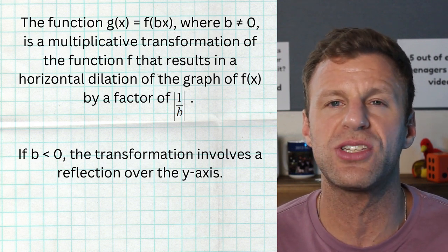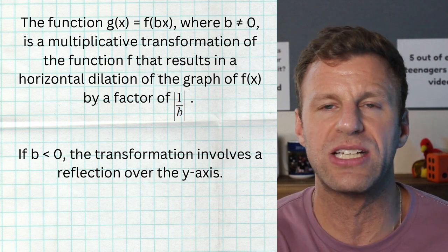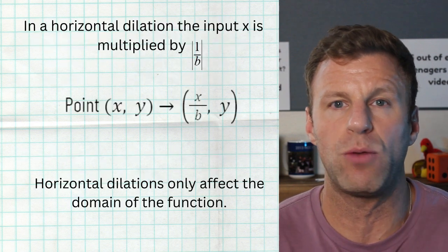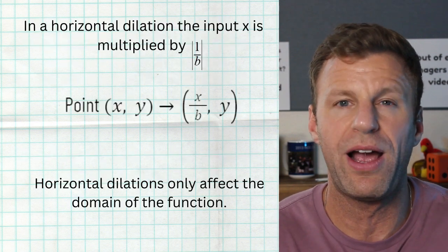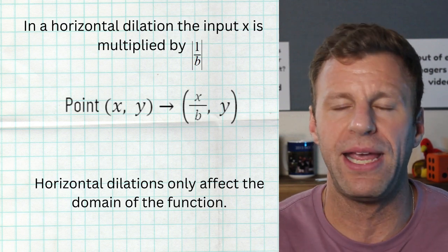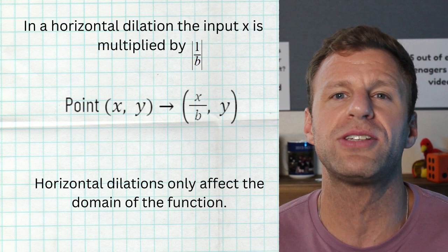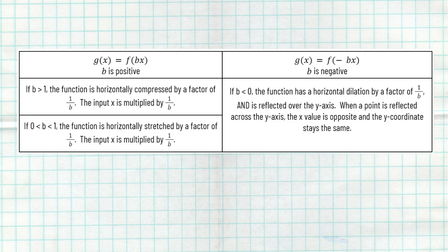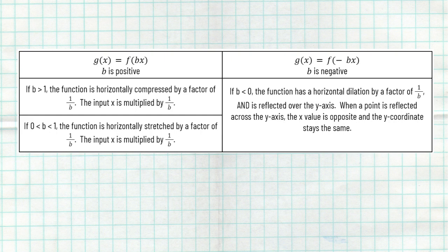And when you reflect across the y-axis, your y values actually stay the same — it's your x values that reflect. So again, a horizontal dilation is when you have a point x comma y, and we're going to multiply the inside — we're gonna multiply our inputs by b. Now what that actually does to our function is it multiplies those inputs by a factor of one over b. So if our b value is greater than one, the function is horizontally compressed by a factor of one over b. So if you have a b value of say three, you're going to multiply all of your inputs by one over three or one third.